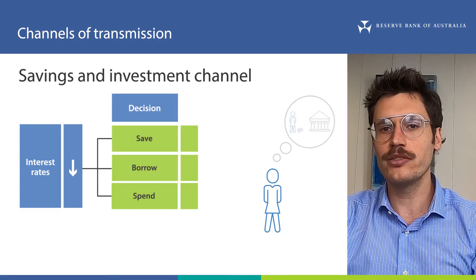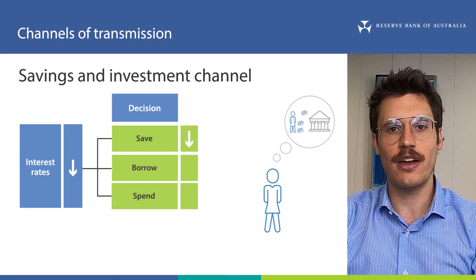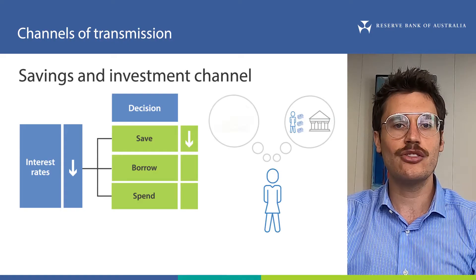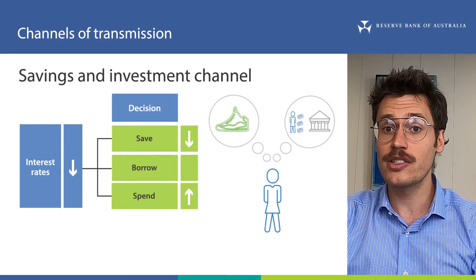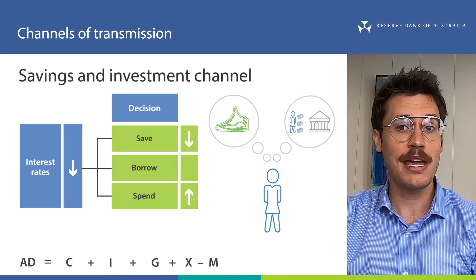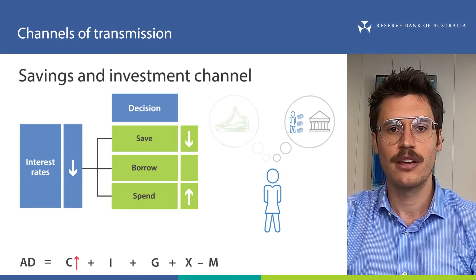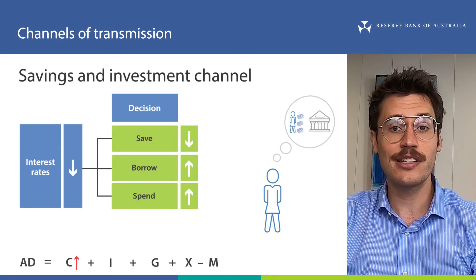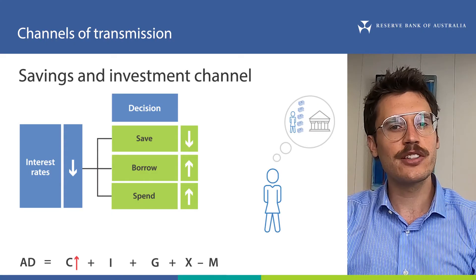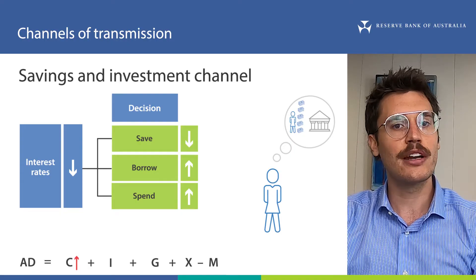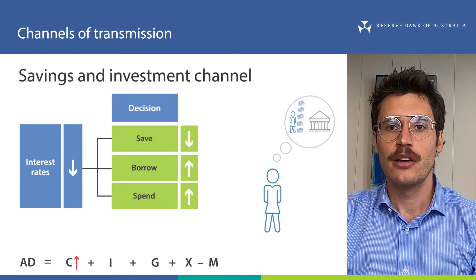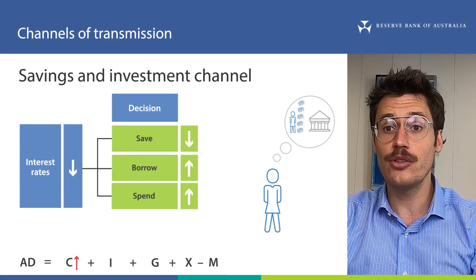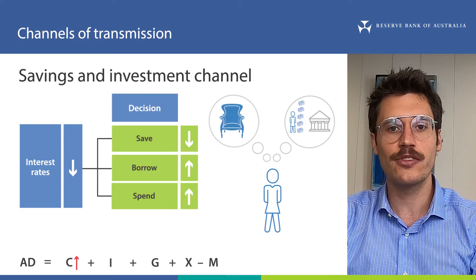For example, lower deposit rates reduce the incentive for households to save their money. Instead of saving, they may choose to spend it on goods and services. In our aggregate demand equation this would increase consumption. In addition, lower lending rates can encourage households to increase their borrowing, because they'll face lower loan repayments and as a result can afford to borrow more. This can also increase consumption — for example, households could borrow to purchase a new car or perhaps some new furniture for their home.